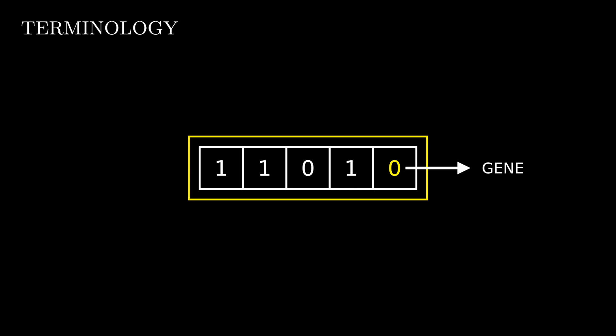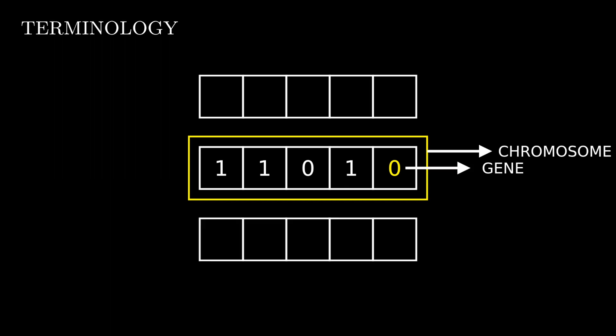The binary string is referred to as a chromosome. A group of chromosomes is referred to as a population. A population is a group of solutions to the problem.